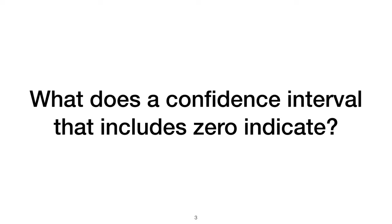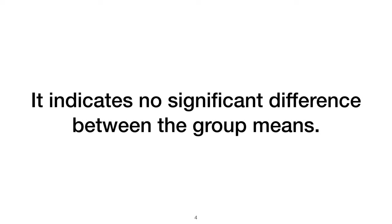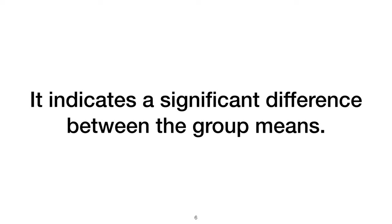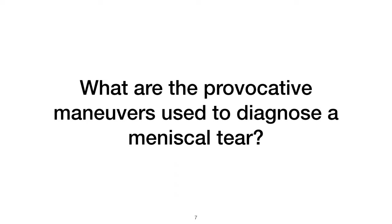What does a confidence interval that includes zero indicate? It indicates no significant difference between the group means. What does a confidence interval that excludes zero indicate? It indicates a significant difference between the group means.